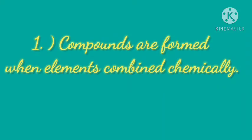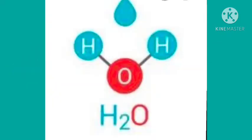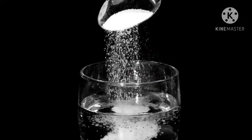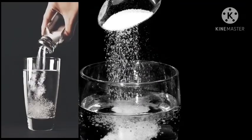A compound is a pure substance made up of two or more elements combined chemically. For example, hydrogen and oxygen are elements that combine together chemically to form water, which is a compound. Whereas when two or more substances combine together physically they form a mixture — for example, salt when dissolved in water gives us salt solution, which is a mixture.